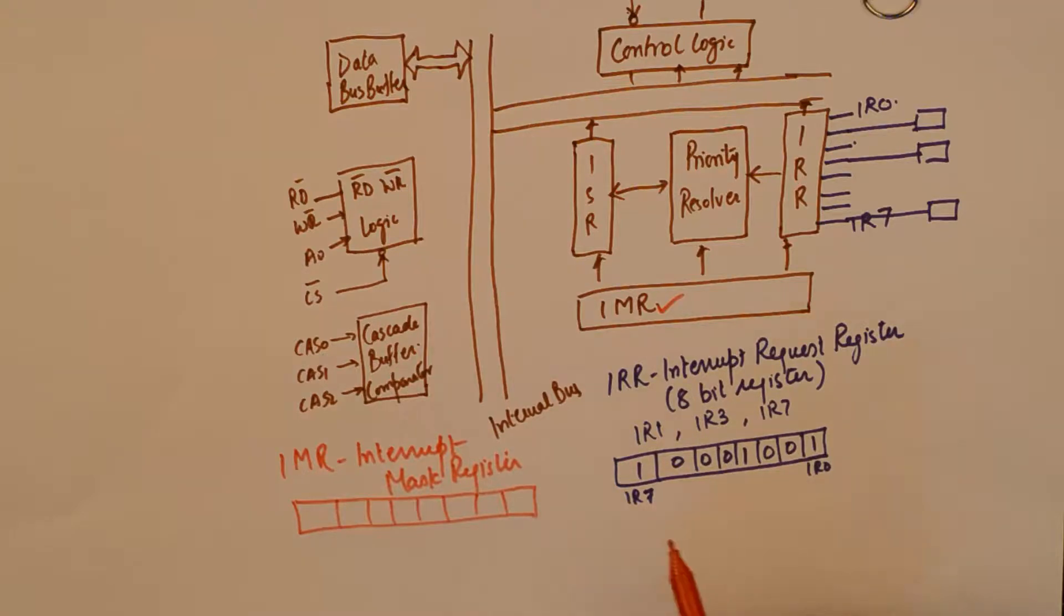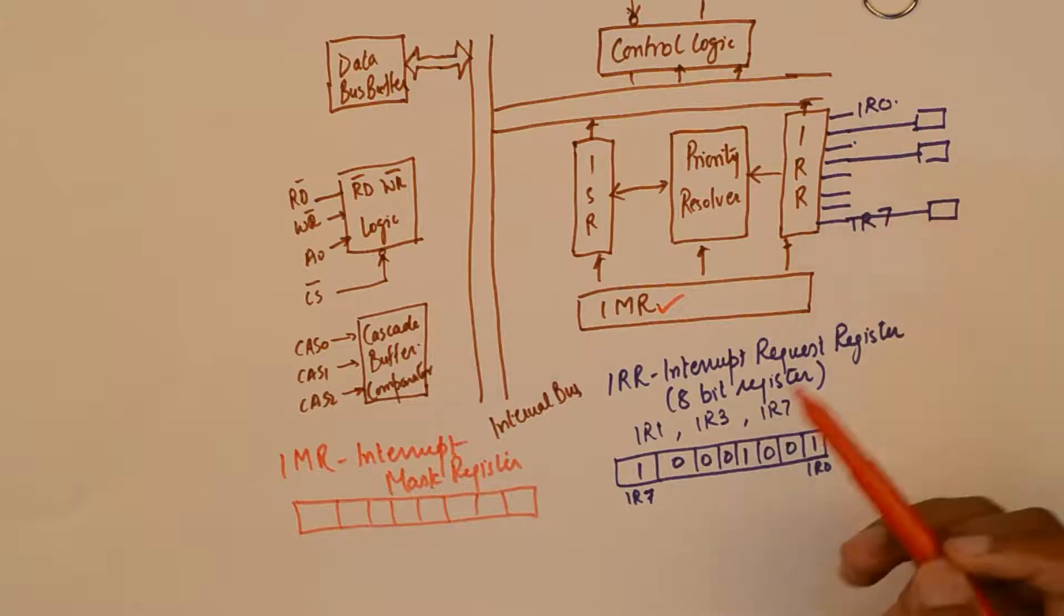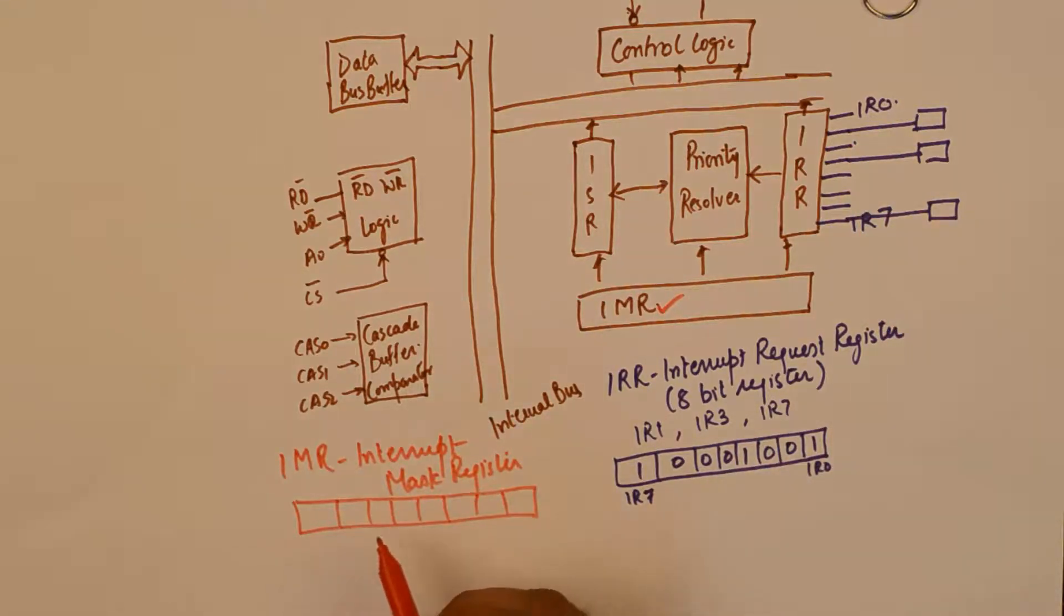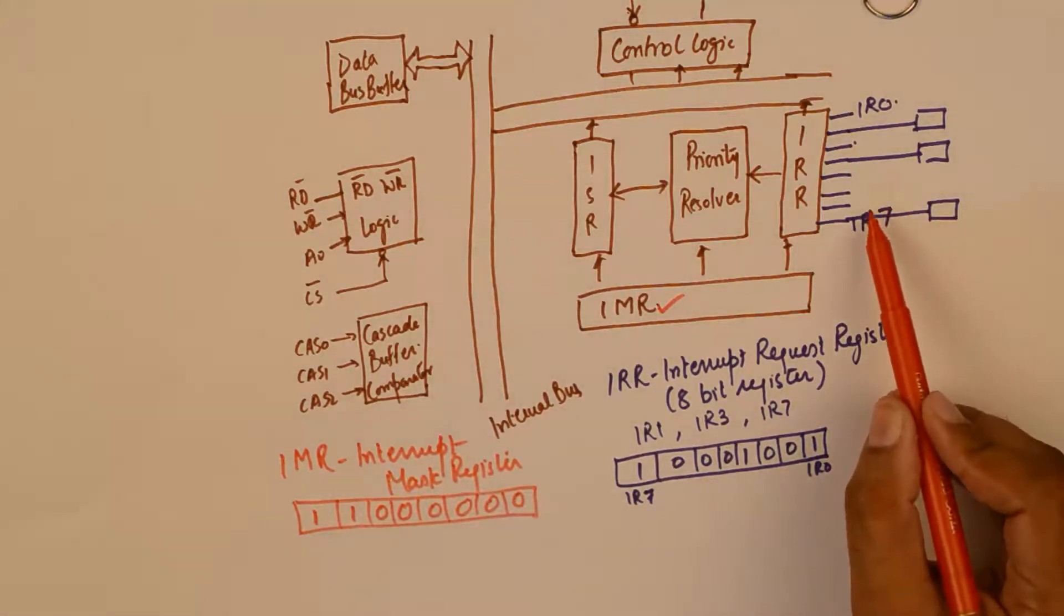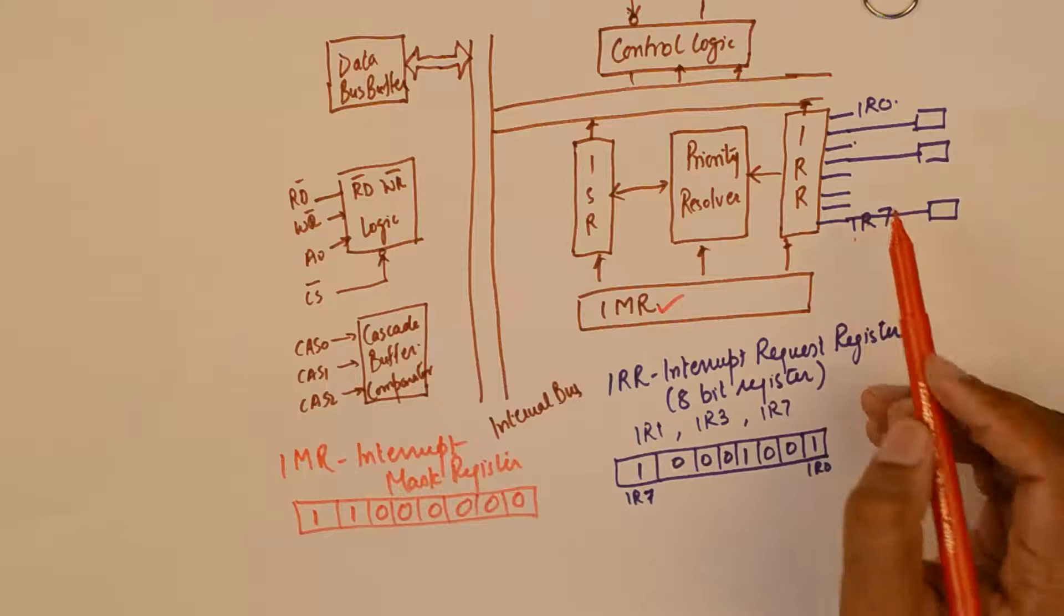And again this is an 8 bit register. As an example this register will mask certain interrupts which are connected to the 8259. As an example if the programmer has masked interrupts 7 and 6 he will put a 1 1 here.